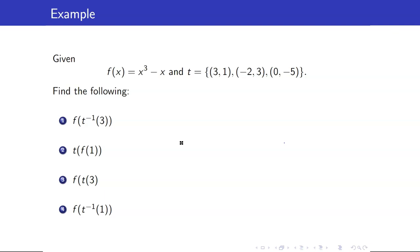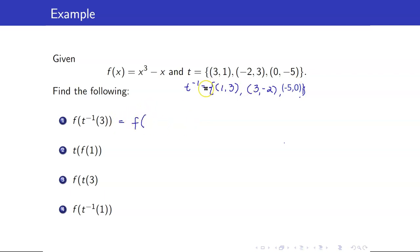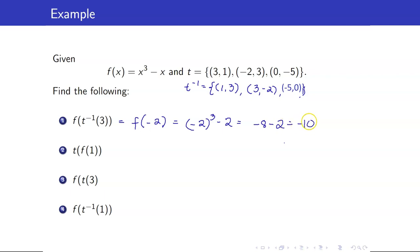For example, we have f of x equals x cubed minus x, and t is the function {(3, 1), (-2, 3), (0, -5)}. We want to find f of t inverse of 3. What is t inverse of 3? Write the inverse function t inverse: {(1, 3), (3, -2), (-5, 0)}. So t inverse of 3 is -2. And f of -2 is (-2) cubed minus 2, which equals -8 minus 2, or -10.